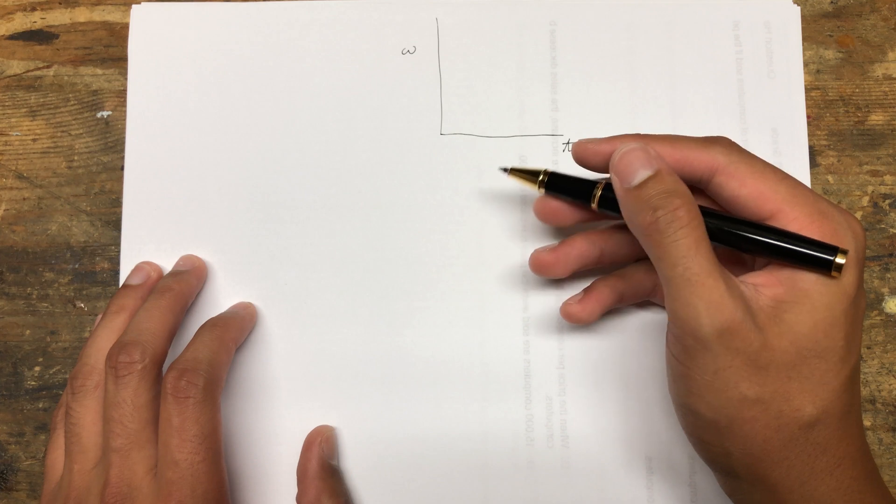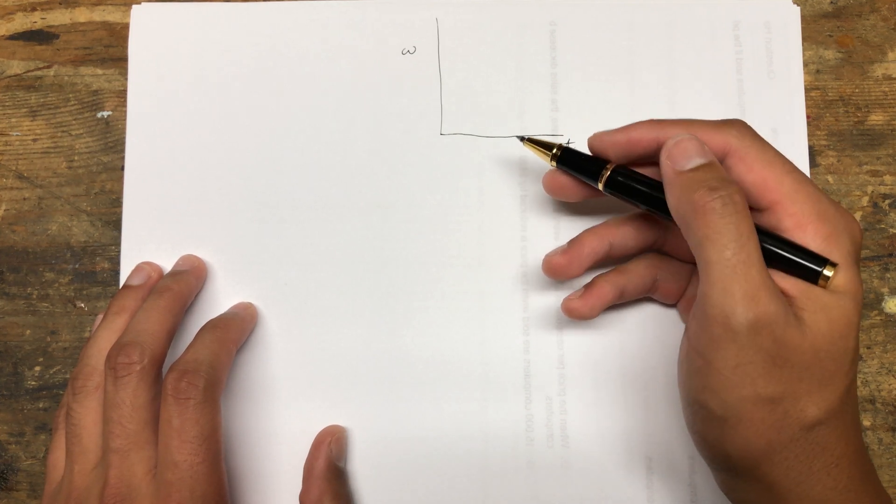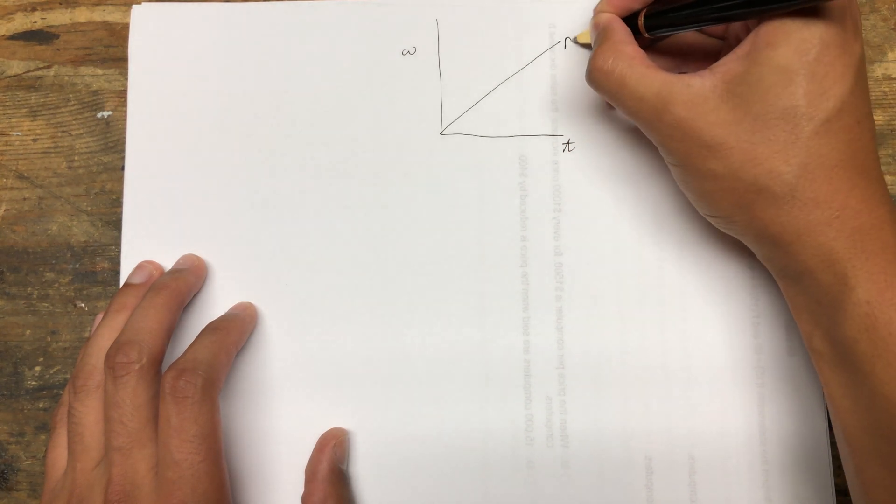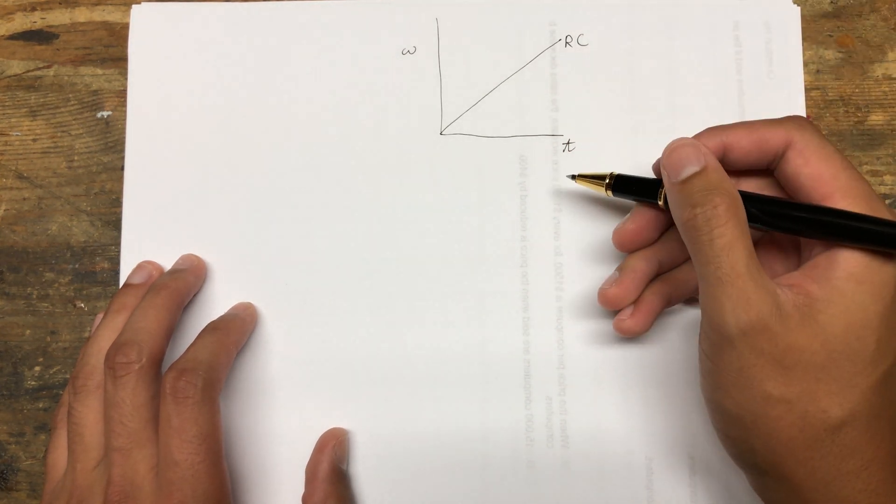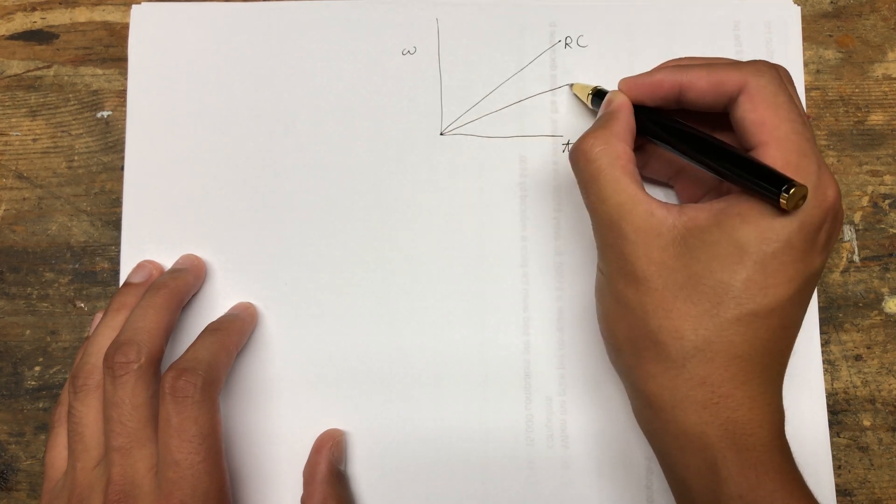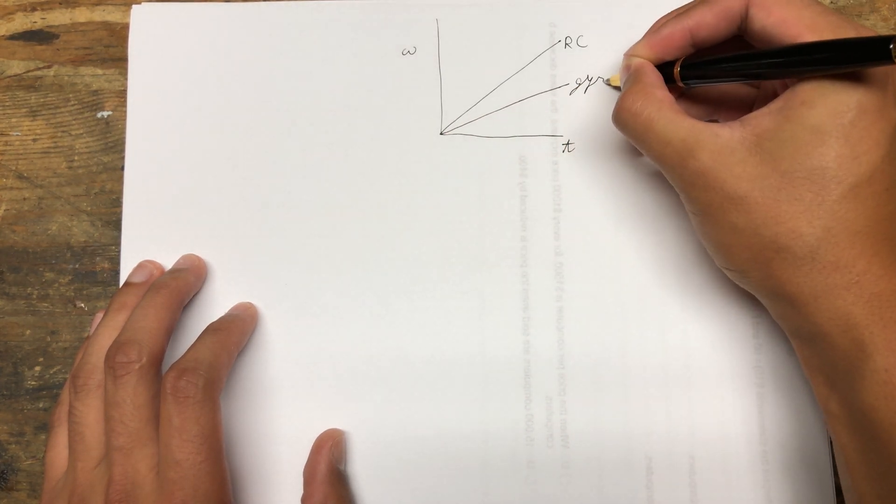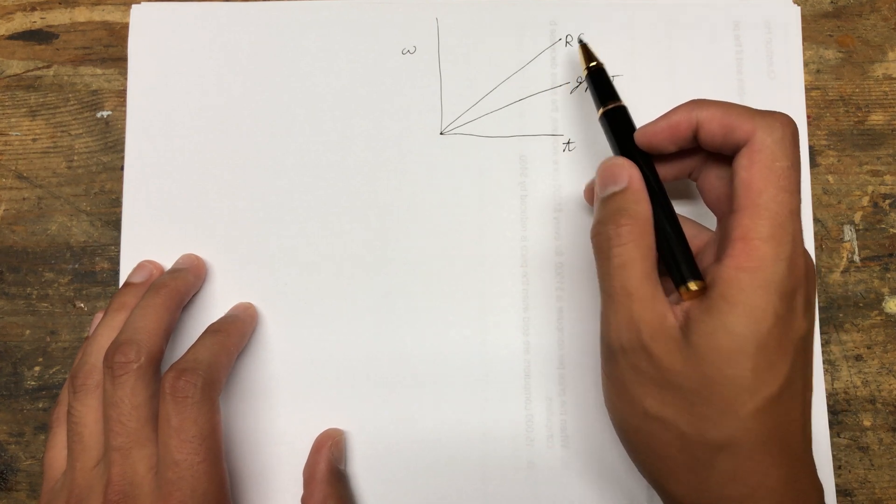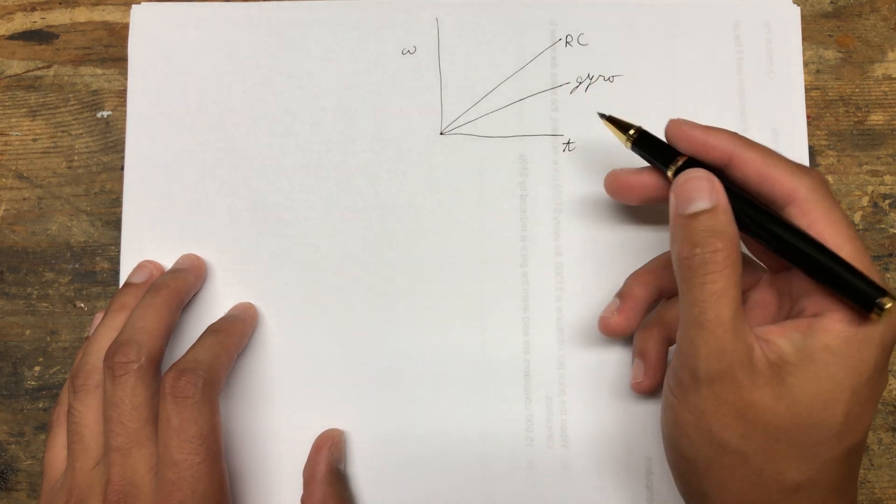A PID controller responds to the amount of error in the system. We have our commanded rate of rotation, our RC signal, and then we have our actual rate of rotation measured by the gyro.